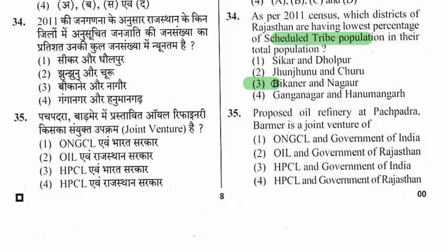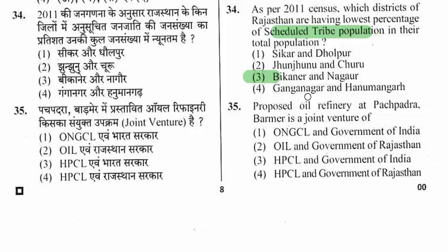Question 35: The proposed oil refinery at Pachpadra, Barmer is a joint venture of which entities? Options include ONGC and Government of India, OIL and Government of Rajasthan, HPCL and Government of India, and HPCL and Government of Rajasthan. The right option is HPCL and Government of Rajasthan.